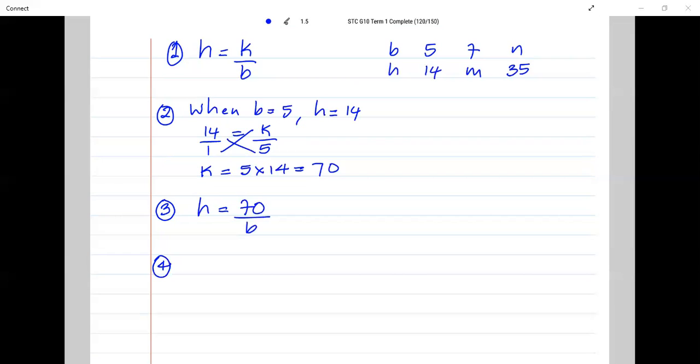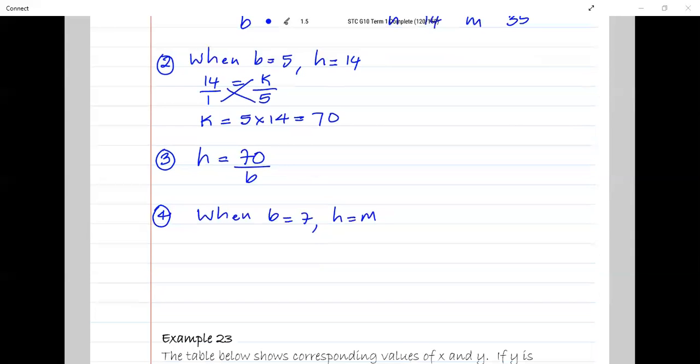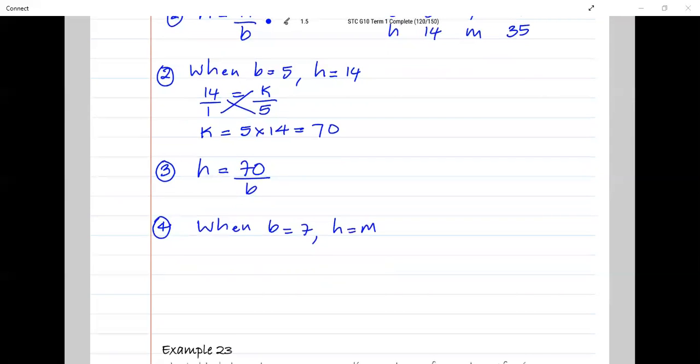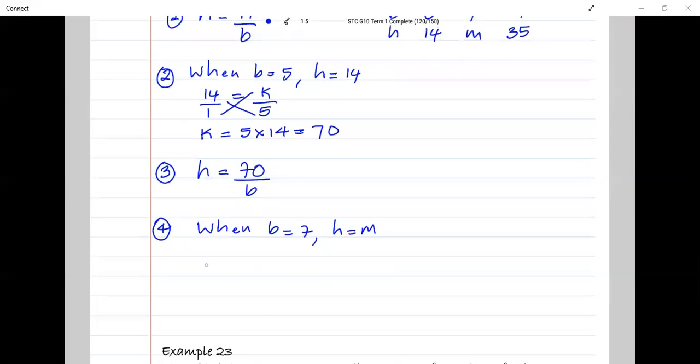Notice this, when B is equal to 7, H is equal to M. So here I'm given a value of B to find a value of H. So let's put them in, M is H is equal to 70 over B, which is 7. 70 divided by 7 is 10. So M is 10.